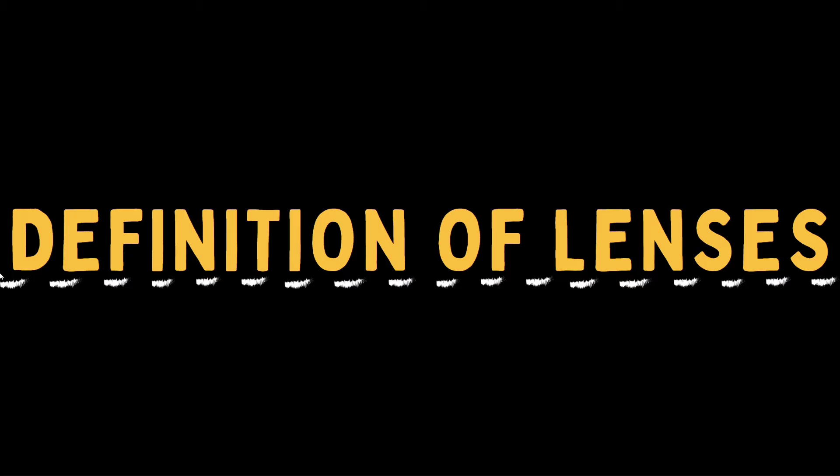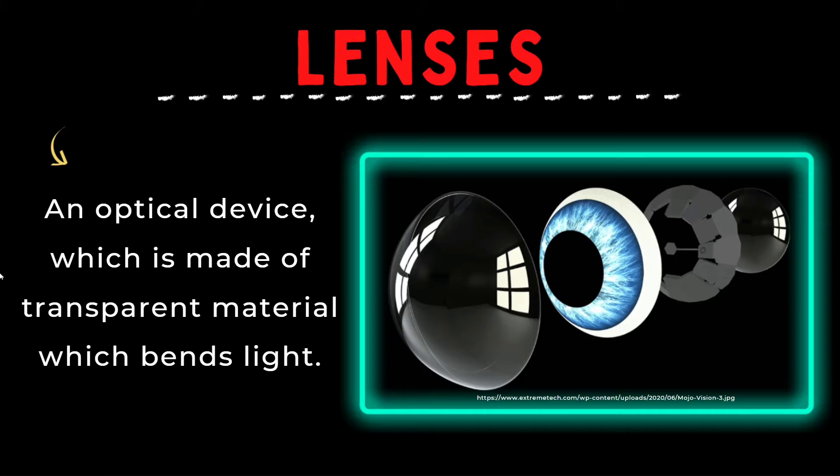Have you seen a lens? When we say lenses, it is an optical device which is made of transparent material which bends light. When we say bending of light, this is what we call refraction of light. If you remember what I discussed about mirrors, that was bouncing back of light. This time, lenses involve bending of light. Please take note of that.